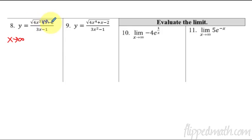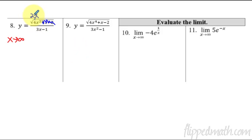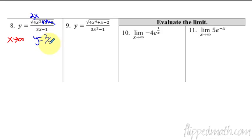Now here are examples eight and nine, where you don't get the same answers approaching positive versus negative infinity. Let's start with x approaching infinity. Remember, you only care about the largest terms, so what is the square root of 4x²? That's basically 2x. So you have 2x over 3x, and therefore the horizontal asymptote is y = 2/3.